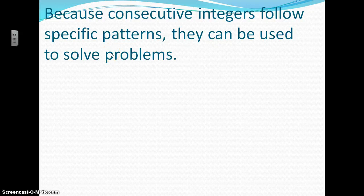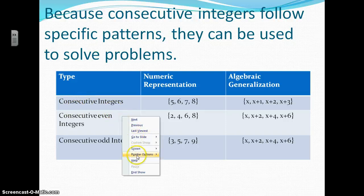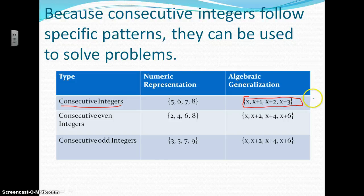The setup for consecutive numbers is as follows. If it just says the word 'consecutive numbers,' you're going to use this setup: X, X plus 1, X plus 2, X plus 3. So the next one will be X plus 4, X plus 5, and so on. Consecutive integers or numbers — remember, integers just means numbers — means you have numbers that are in order.